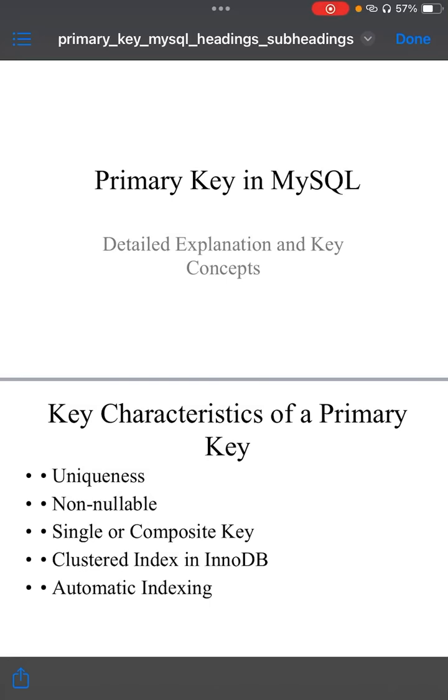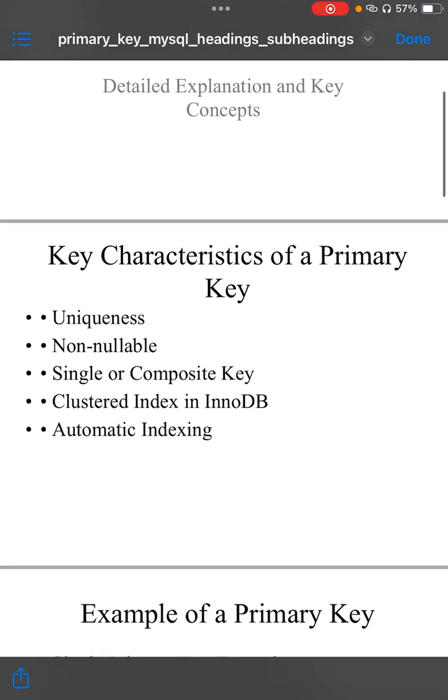Primary key in MySQL is a fundamental constraint used to uniquely identify each record or row within a table. It plays a critical role in maintaining data integrity, ensuring that no two rows can have the same primary key value, and providing efficient access to data.